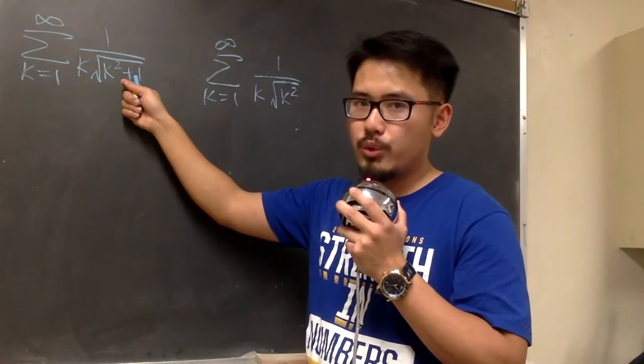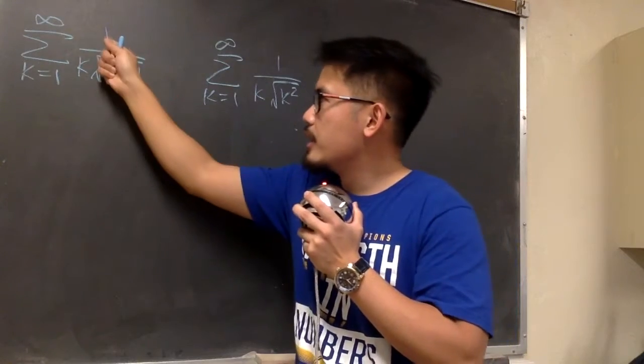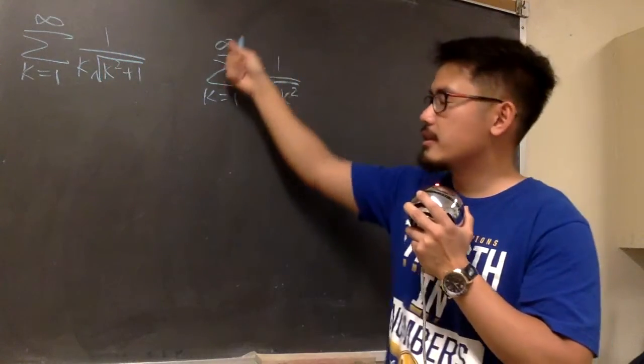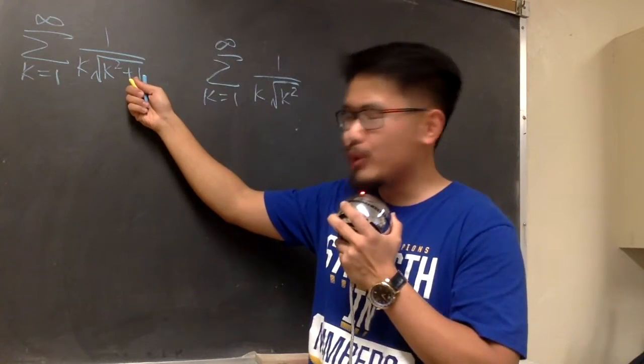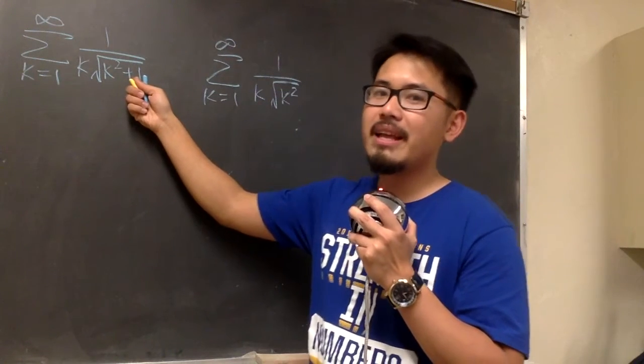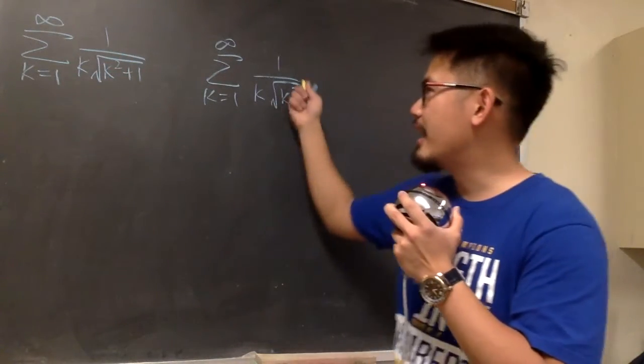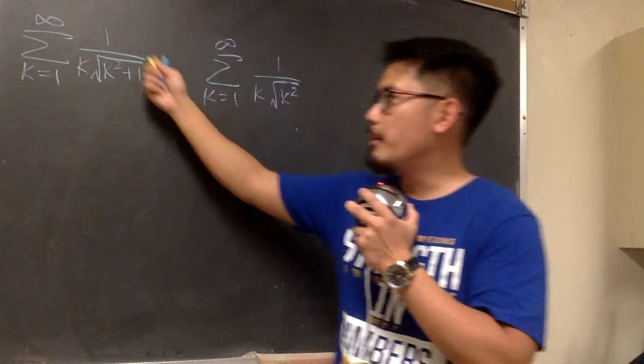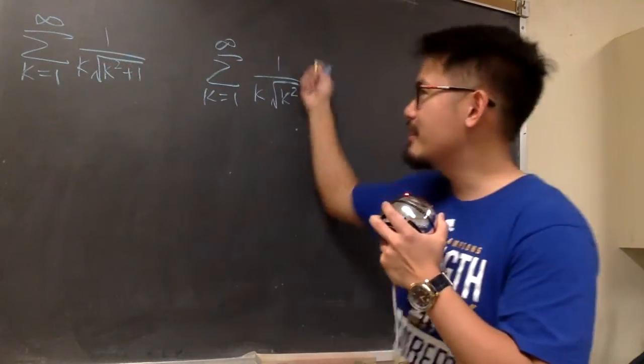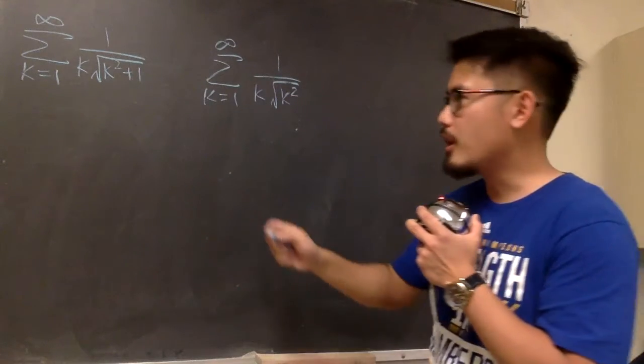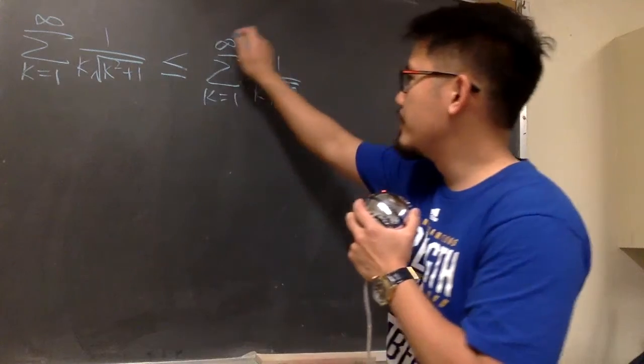And now let's make a comparison. I took away 1 in the square root right here in the denominator. So is this going to be bigger or smaller than this? Well, you see that we have the plus 1 in the square root in the denominator. So the denominator here is technically bigger than this one. If you have a bigger denominator, when you do the 1 over, this is going to be smaller than this, right? So we know the original is going to be less than or equal to this one.